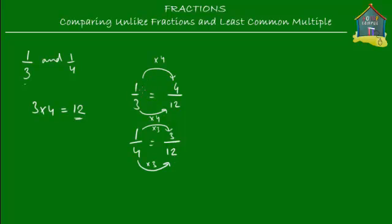So one-third and one-fourth were unlike fractions, but 4/12 and 3/12 are like fractions, making it easy to show them on the lasagna. However, this is not the best method. What if you have unlike fractions like one-sixth and one-fourth and want to represent them on the lasagna?